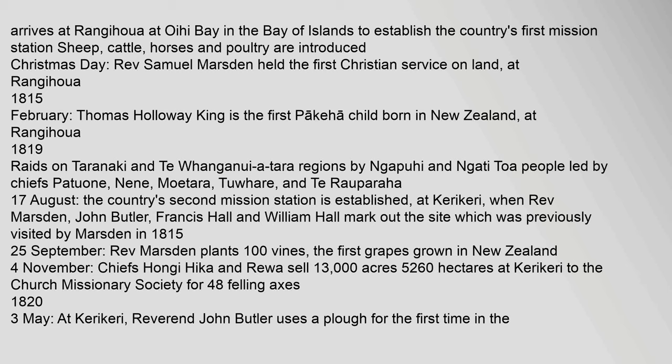1815, February: Thomas Holloway King is the first Pakeha child born in New Zealand, at Rangihoua. 1819: Raids on Taranaki and Te Whanganui-a-Tara regions by Ngapuhi and Ngati Toa people, led by Chiefs Patuone, Nene, Motara, Tufari and Te Rauparaha. 17 August: The country's second mission station is established at Karikari, when Rev. Marsden, John Butler, Francis Hall and William Hall mark out the site.